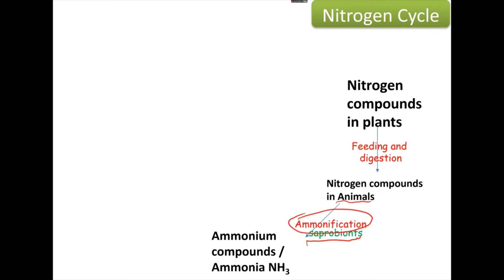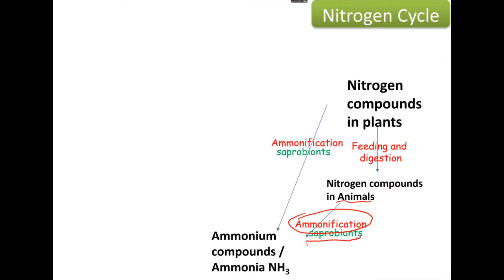So just in the name, we form ammonia — NH3. This can also be formed directly from the plant, as the plant could also die and decay. Again, the saprobiants will be responsible for the ammonification of that, turning the nitrogenous compounds from the plants to NH3, which could then be present in the soil.